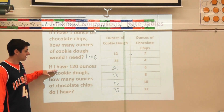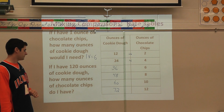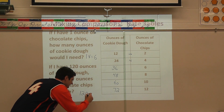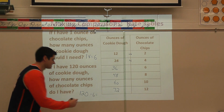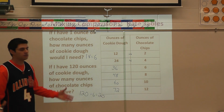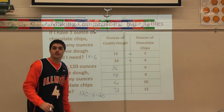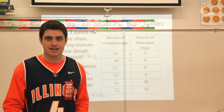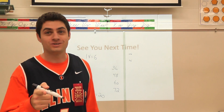For the second question: if I have 120 ounces of cookie dough, how many ounces of chocolate chips? They're saying 120 is on the cookie dough side, so I divide by 6. 120 divided by 6 is 20 — that's 20 ounces of chocolate chips. Hopefully I didn't make you too hungry talking about macaroni and chocolate chip cookies today. Thank you for tuning in to Mr. Lehner's Math Extravaganza. We'll see you next time.